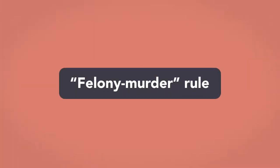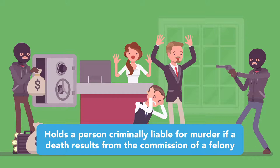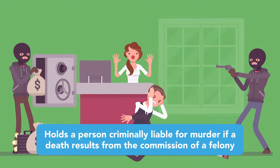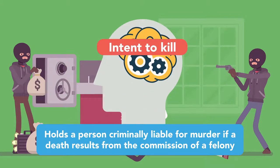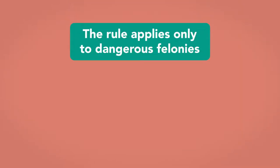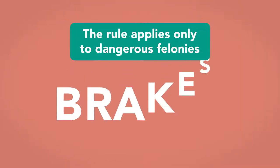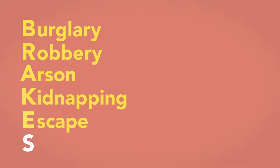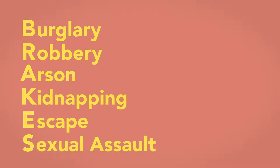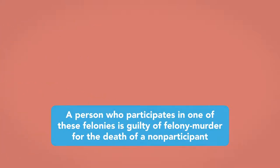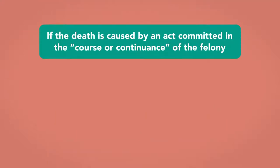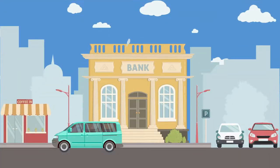The felony murder rule is a common law doctrine that holds a person criminally liable for murder if a death results from the commission of a felony, regardless of whether or not he had the intent to kill. The rule only applies to dangerous felonies, such as those referred to by the acronym BREAKS: burglary, robbery, arson, kidnapping, escape from prison, and sexual assault. A person who participates in one of these felonies is guilty of felony murder for the death of a non-participant, or in some states even of a participant in the crime, if the death is caused by an act committed in the course or continuance of the felony or the immediate flight therefrom.